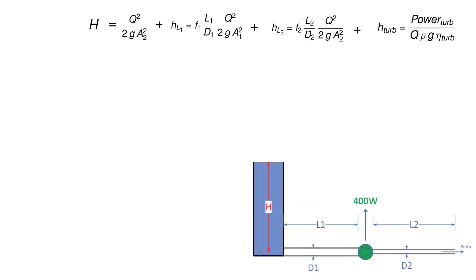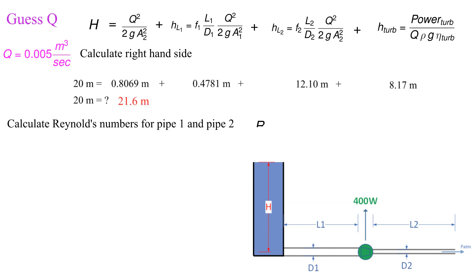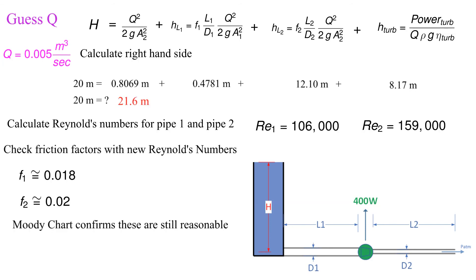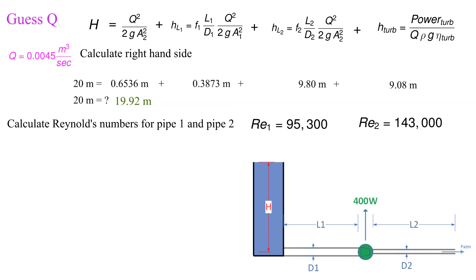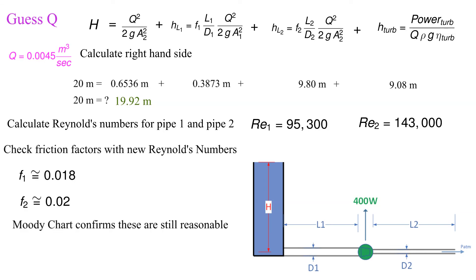Now let's try 0.005 cubic meters per second. Results indicate that we overshot, so let's split the difference on our next iteration. Splitting the difference we try 0.0045 cubic meters per second. Right hand side is 19.9 meters, which is pretty good and I'm tempted to stop there. However let's try one more iteration to see if we can get closer.